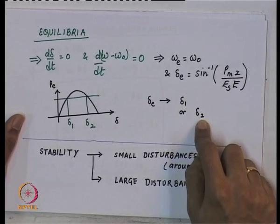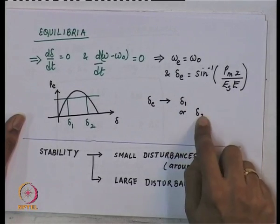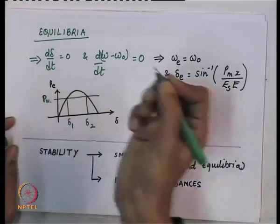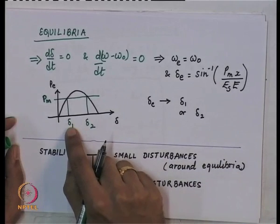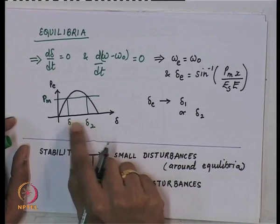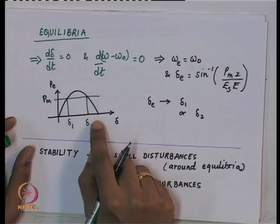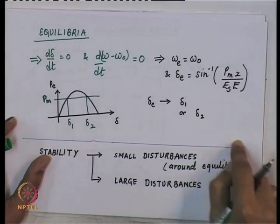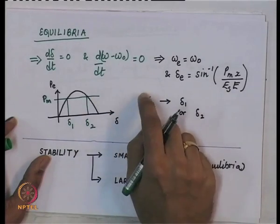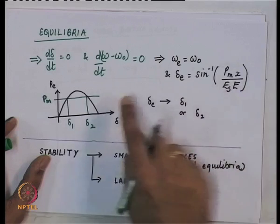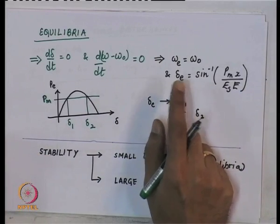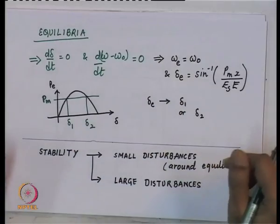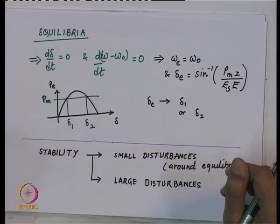Between 0 and 180 degrees, there could be two equilibria. If P_m is the mechanical power, assumed constant, then there are two equilibria delta_1 and delta_2. One is less than 90 degrees and the other is greater than 90 degrees. You could have more equilibria continuing beyond, but they are spaced 360 degrees away and are indicative of the same rotor position, so we will not talk of equilibria beyond 180 degrees.